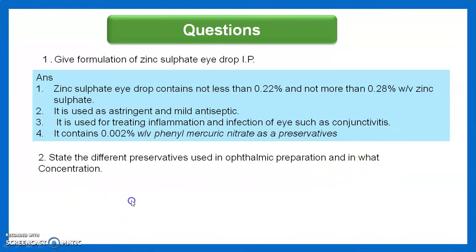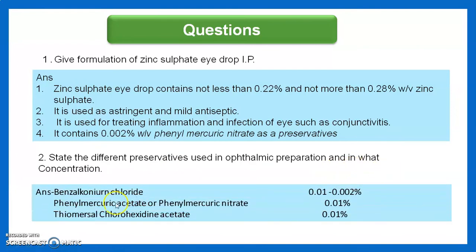Different preservatives used in ophthalmic preparations and their concentrations: benzalkonium chloride 0.1 to 0.002%, phenyl mercuric acetate or phenyl mercuric nitrate 0.1%, and thiomersal.